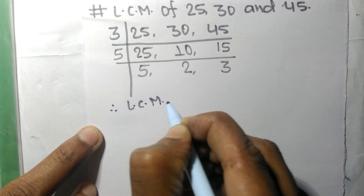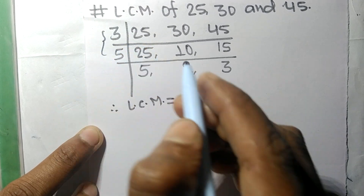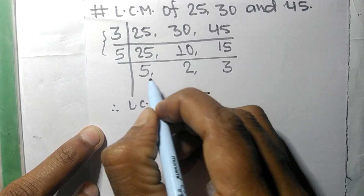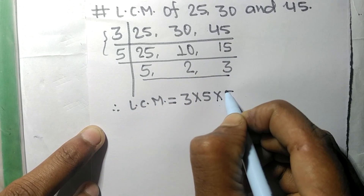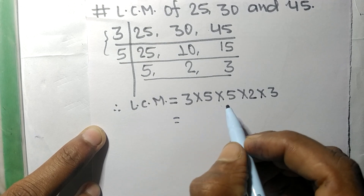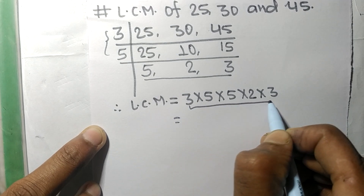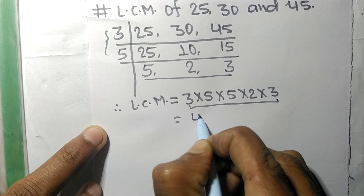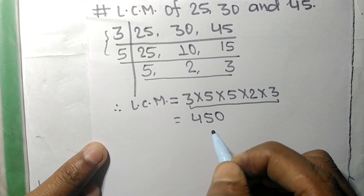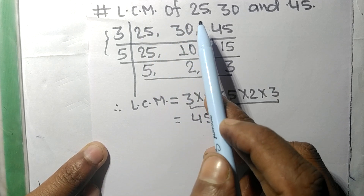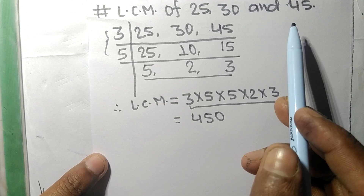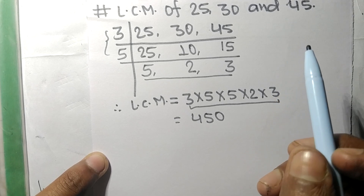Therefore the LCM is calculated by multiplying all the divisors: 3 times 5 from one side, and 5 times 2 times 3 from the other side. Multiplying all these numbers together gives us 450. So 450 is the LCM of 25, 30, and 45. Thanks for watching.